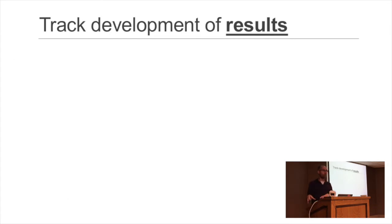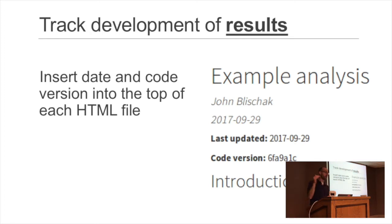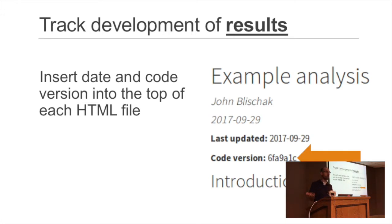The advice to version-control your source code is popular, but when you're doing exploratory data analysis — constantly collecting new data, trying new parameters, generating new results — it's really important to track the development of results as well. Our R Markdown template automatically inserted the version of the code at the top of each file, so each analysis showed the last time it was updated and the most recent git commit. If months later code could no longer produce the same results, we could always return to that past version to recreate them and compare what changed.